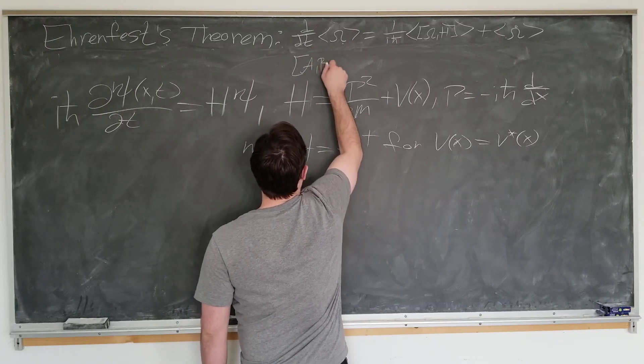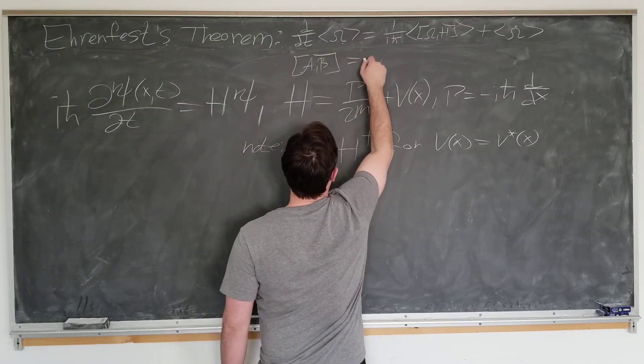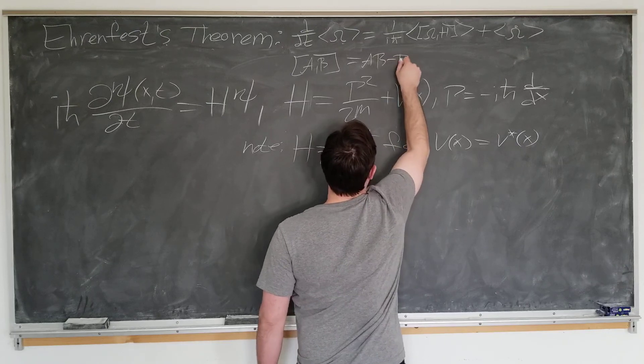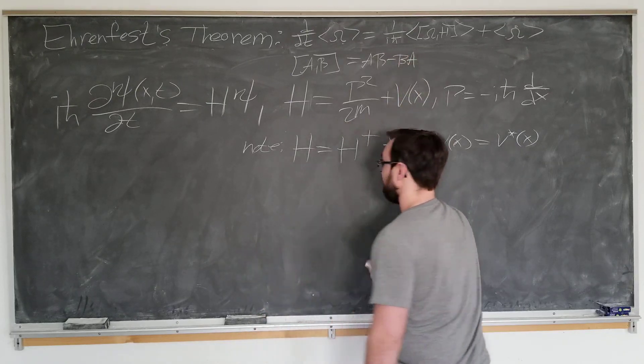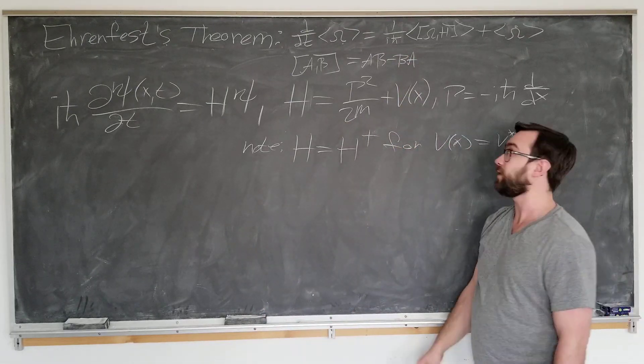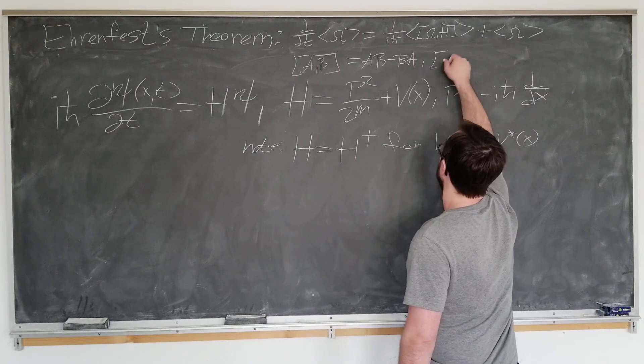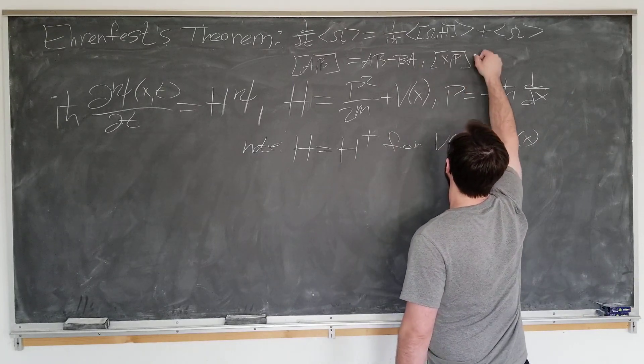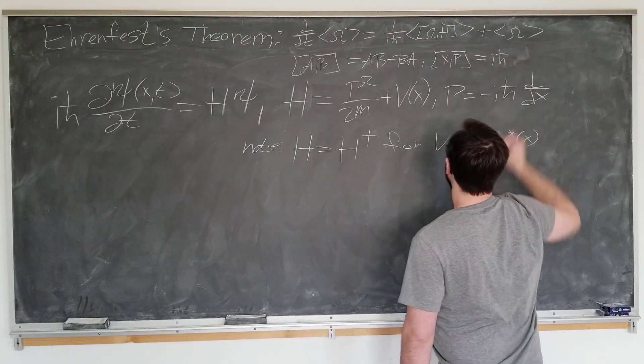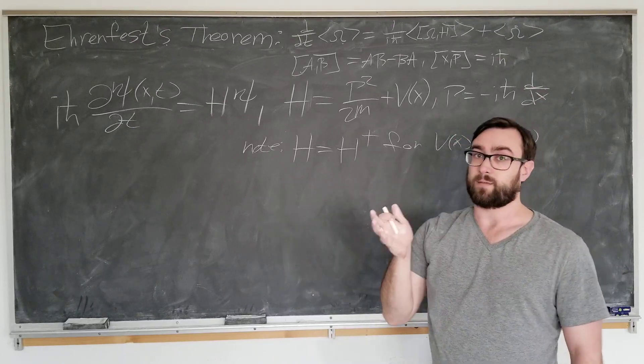We'll also be discussing the commutator of two operators a and b to be a b minus b a, since operators do not necessarily commute in quantum mechanics. We know the canonical commutation x with p equals i h bar, which we will not derive, but we will derive something very similar.